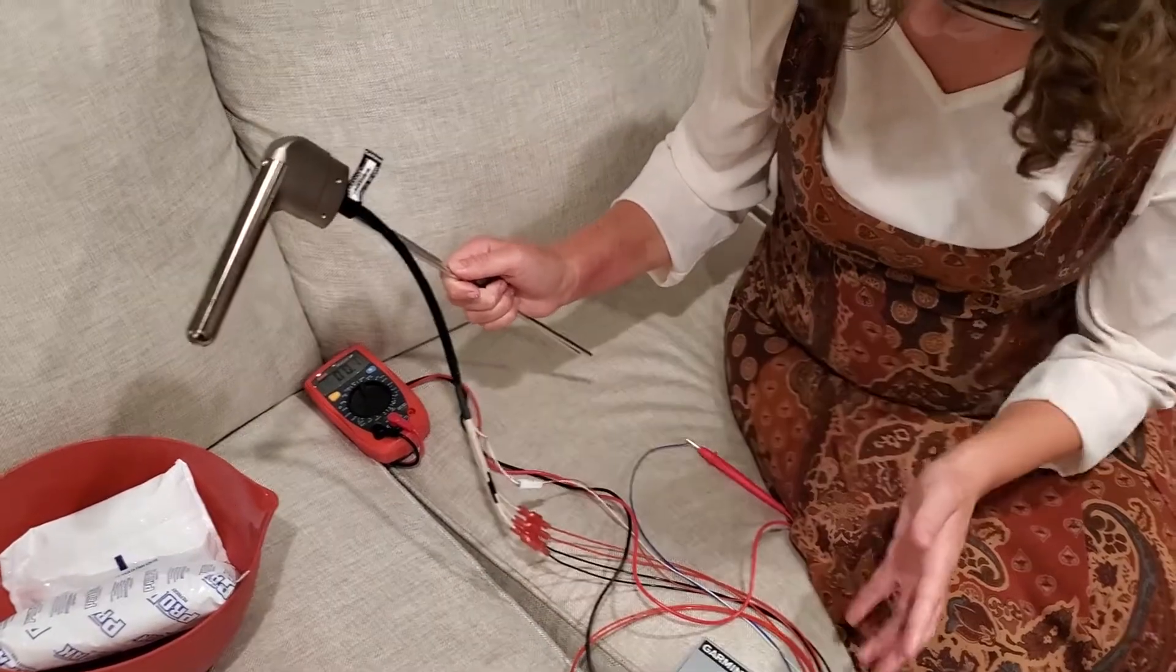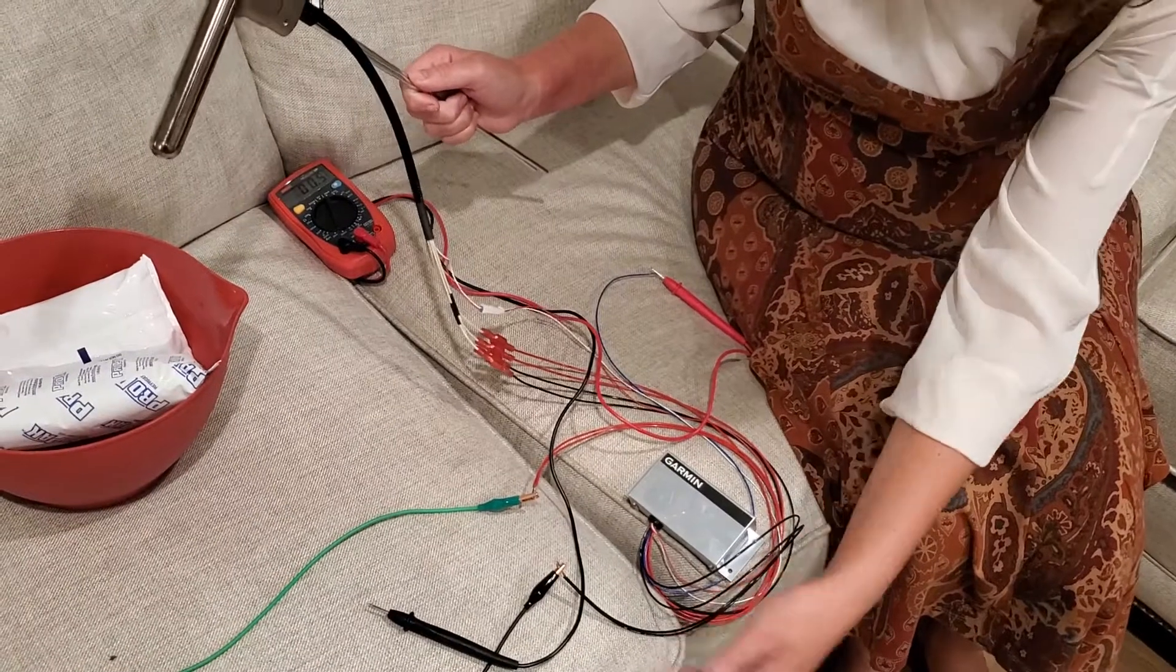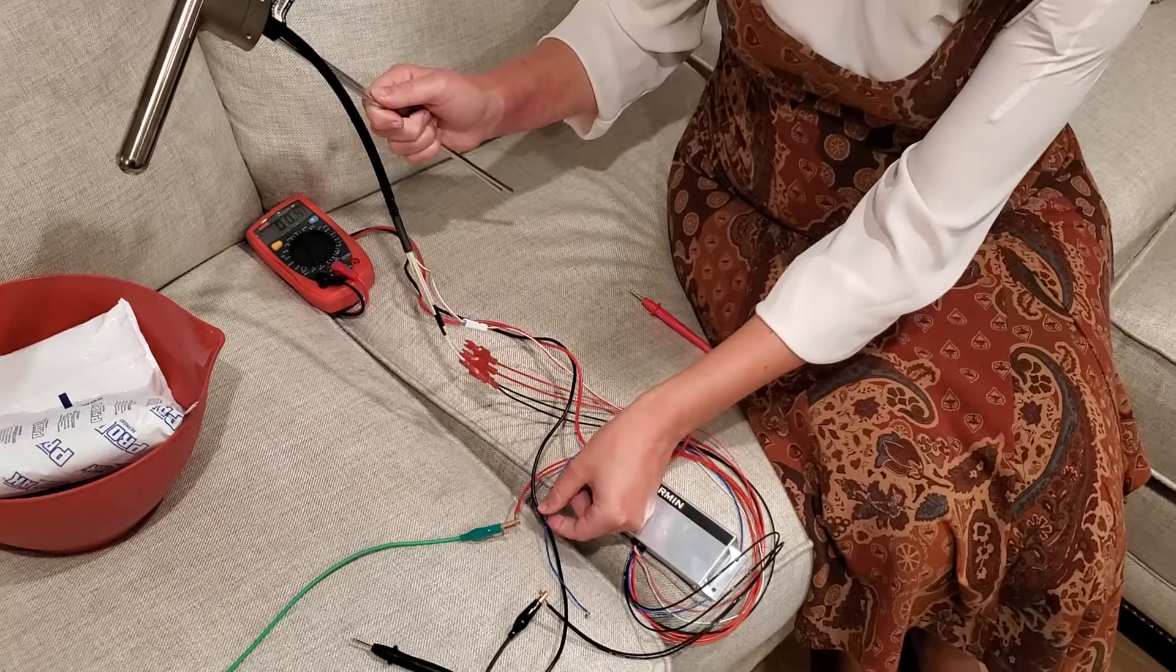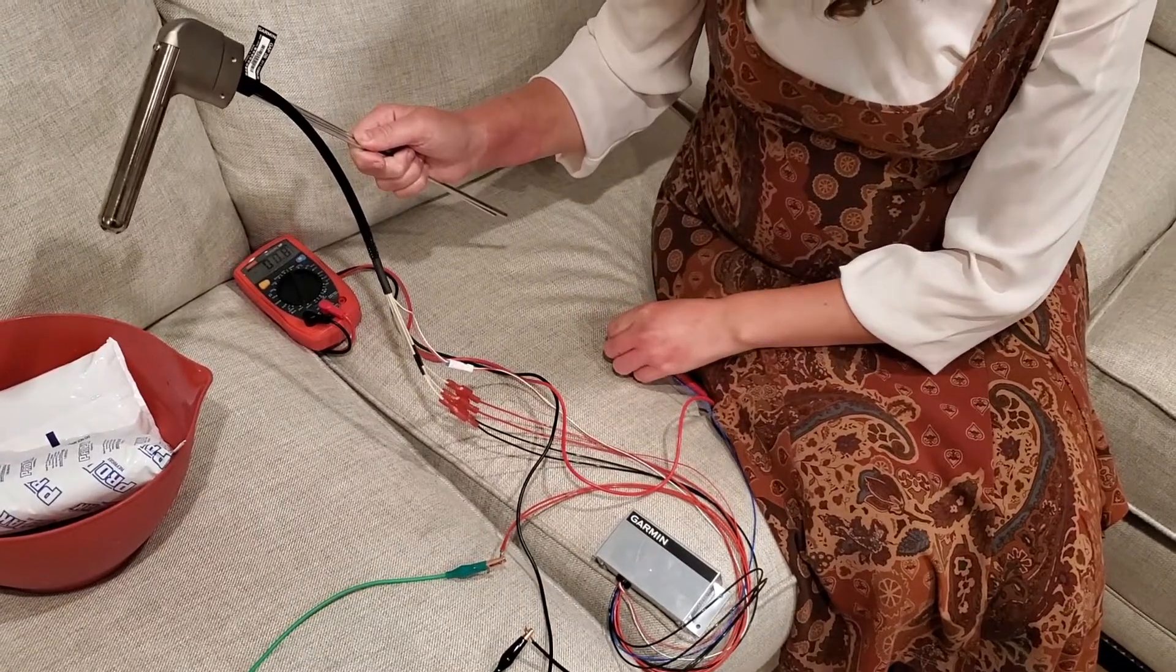Then there's the output wires. There's the red wire which probably supplies power. Black wire to ground. Then we've got this mysterious blue wire which, based on our reading, should be the signal wire.